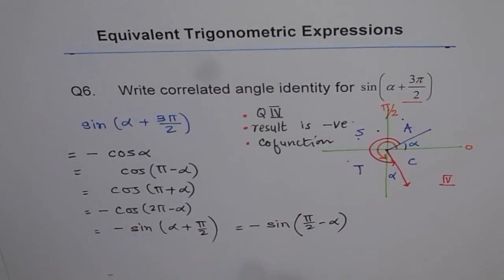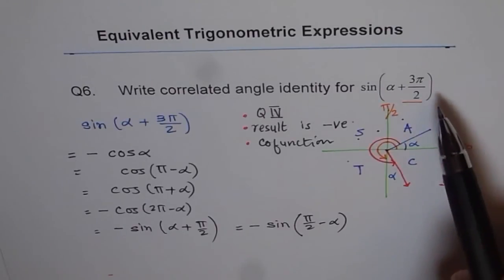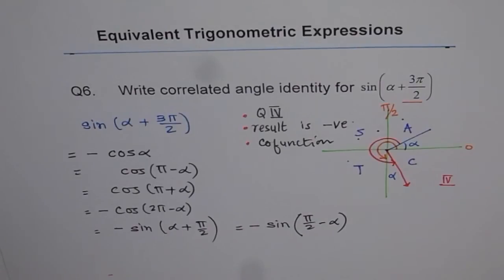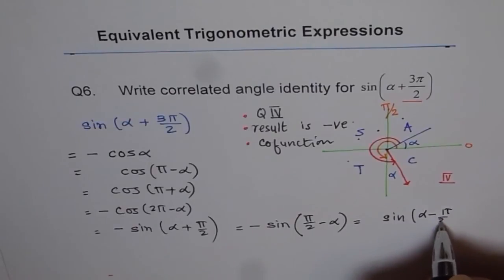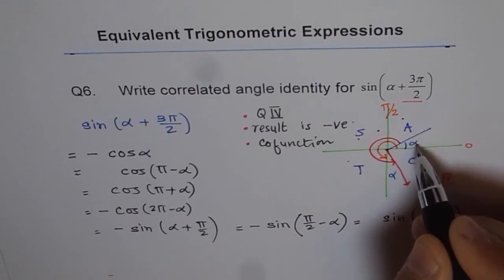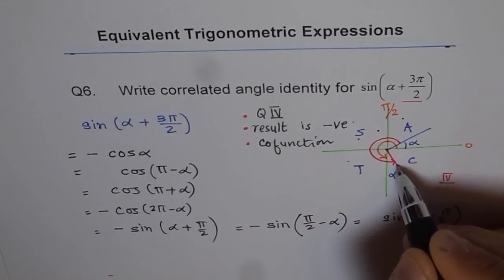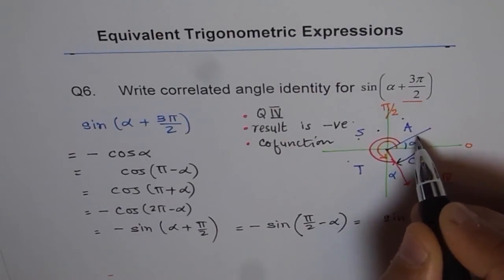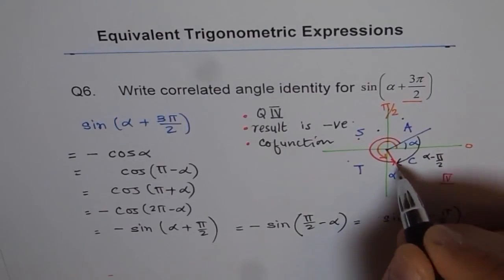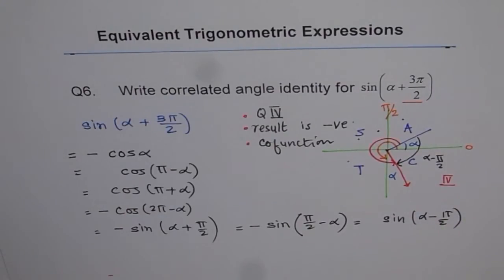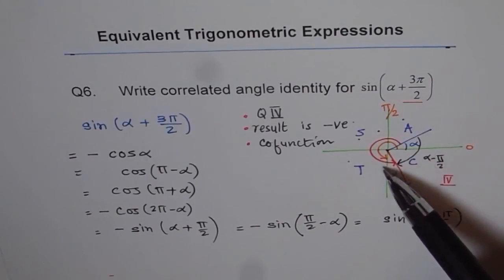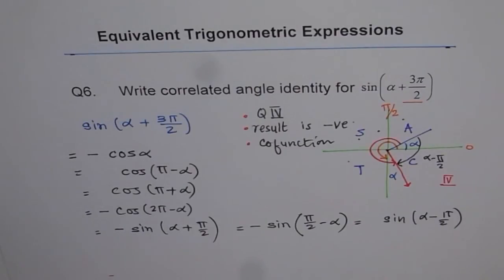We could also do alpha minus pi by 2. So we write sin of alpha minus pi by 2. When we do minus pi by 2, that means from here we go pi by 2 back and reach this side — so alpha minus pi by 2 lands in quadrant 4 where sine is negative. If we want a negative result, this is perfectly fine. So these are all possible correlated angle identities for sine of alpha plus 3 pi by 2. Thanks.